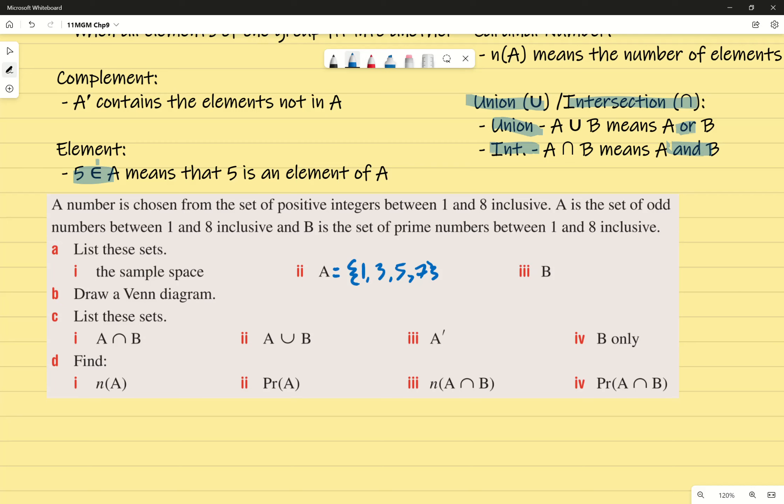B is the set of prime numbers between one and eight. Do we include one? Is one a prime number? No, it's not. So we start with two. And then we go three, five, and seven. Any qualms with that? I like how it's going to the point where I can just throw out a random word like that and no one questions it anymore.